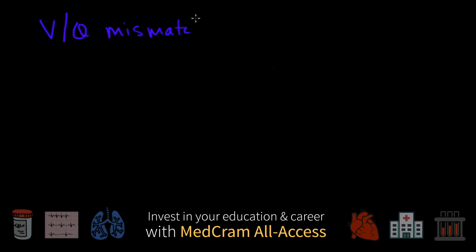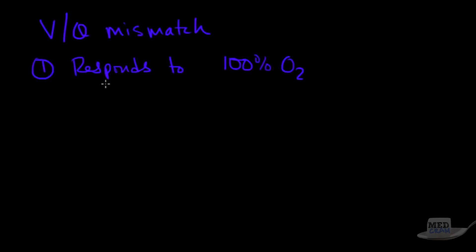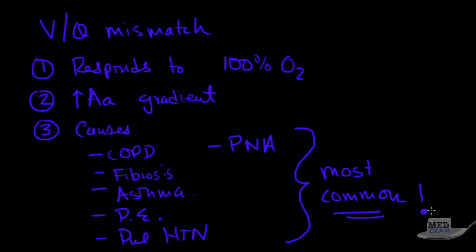Let's summarize the situation with VQ mismatch. Number one: it responds to 100% O2. Remember, the only one that did not respond to 100% O2 was shunting. Number two: you have an increased A-a gradient. Number three: the causes. Here they are: COPD, fibrosis, asthma, pulmonary embolism, pulmonary hypertension, and pneumonia. As a result of all of these causes, it is the most common form. Thank you for joining us.